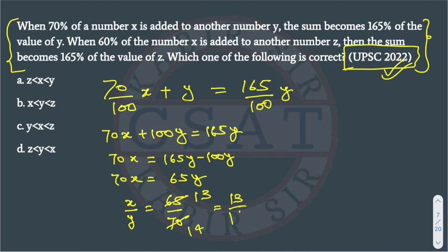Now we will read the other part. When 60 percent of the number x, 60 percent of x, is added to another number z, then the sum becomes 165 percent of the value of z.